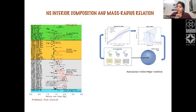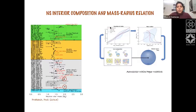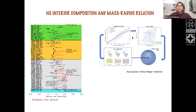Neutron star masses are very interesting because they connect to internal composition. The equation of state — the relationship between pressure and density from statistical mechanics — describes systems because all structural variables can be derived from it. Equations of state can be constructed for neutron stars and connected to structural properties like mass and radius. Mass-radius plots help us understand the internal composition of neutron stars.